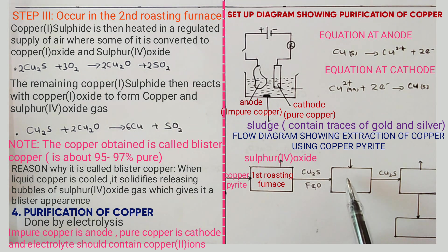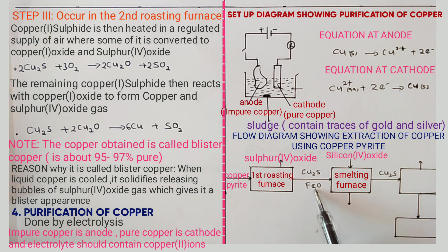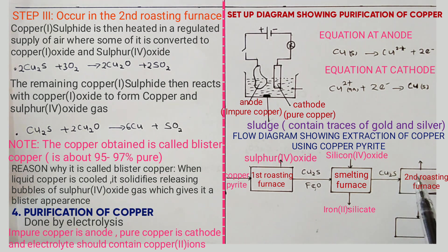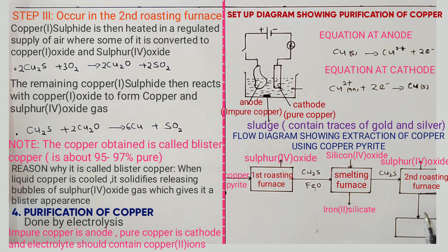In the next stage, the smelting furnace, silicon four oxide is added and reacts with iron two oxide to form iron silicate, which is removed as slag. Copper one sulfide then enters the second roasting furnace, where some reacts with oxygen to form copper one oxide and sulfur four oxide, which exits. The remaining copper one sulfide reacts with copper one oxide to form copper plus sulfur four oxide. Finally, purification by electrolysis yields pure copper.